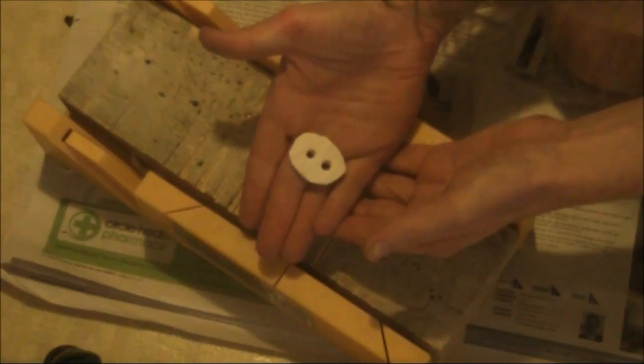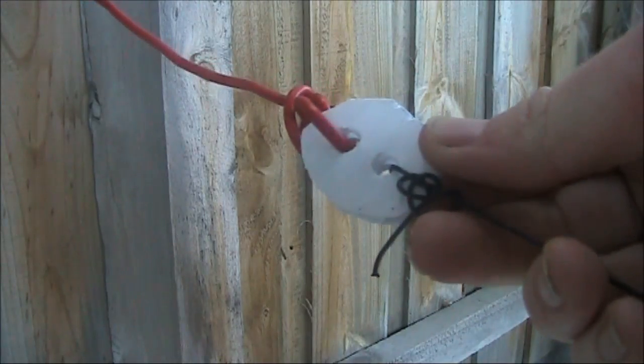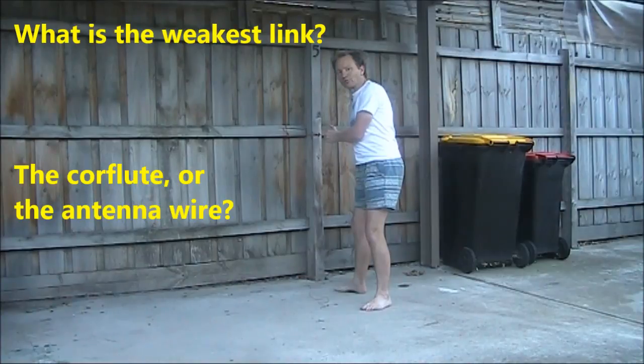You might think this core flute material is pretty flimsy. We'll go outside and give it a test. It only needs to be stronger than the wire that it supports. Now we'll see what's the weakest link. Is it the core flute, or is it the wire?